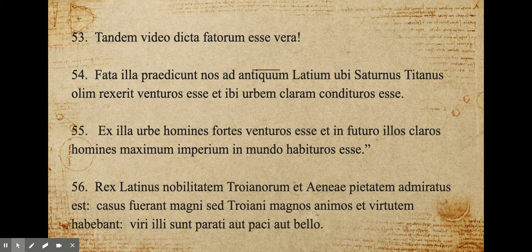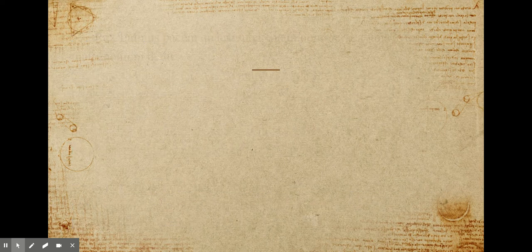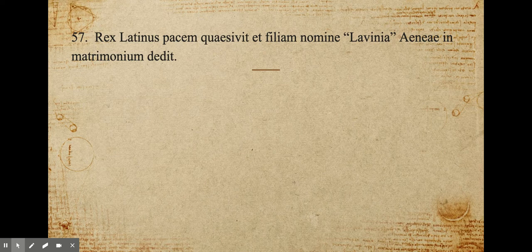Ex illa urbe homines fortes venturos esse et in futura illos claros homines maximum imperium in mundo apituros esse. From that city, brave men would come, and in the future those famous men would have the greatest empire in the world. Rex Latinus nobilitatem Troianorum et Aeneae pietatem admiratus est. King Latinus admired the nobility of the Trojans and the pietas of Aeneas, sought peace, and gave his daughter named Lavinia to Aeneas in marriage.